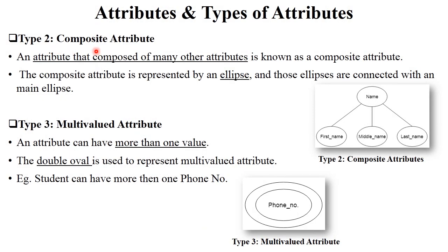The second type is composite attribute. Composite attribute means there is one main attribute that is again divided into sub-attributes. For example, name is an attribute, and name is divided into three parts: first name, middle name, and last name. This is called a composite attribute. Composite attributes are also represented by an ellipse. Composite attributes means sub-attributes.